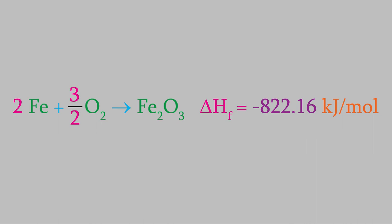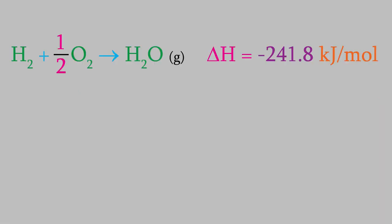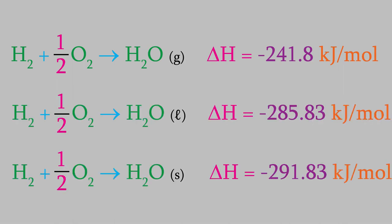One other thing to notice: when you're looking up an enthalpy of formation, you should be careful about what phase the compound is in. For example, the enthalpy of formation of water we saw earlier was for water vapor. Although the chemical reaction looks the same for liquid water and for ice, the enthalpies of the three reactions are all different. This can really alter the results of any calculations you do, so when you look up an enthalpy of formation, make sure you're looking it up for the correct phase.